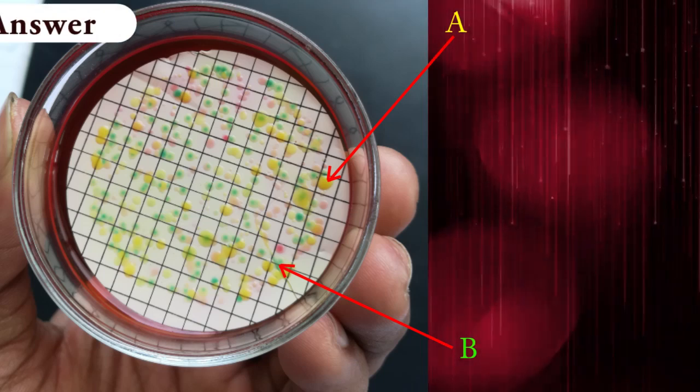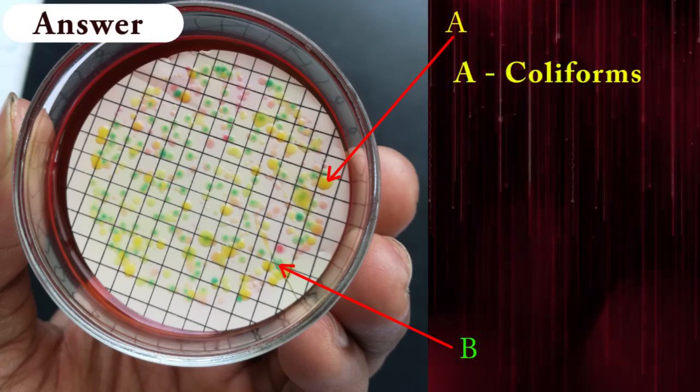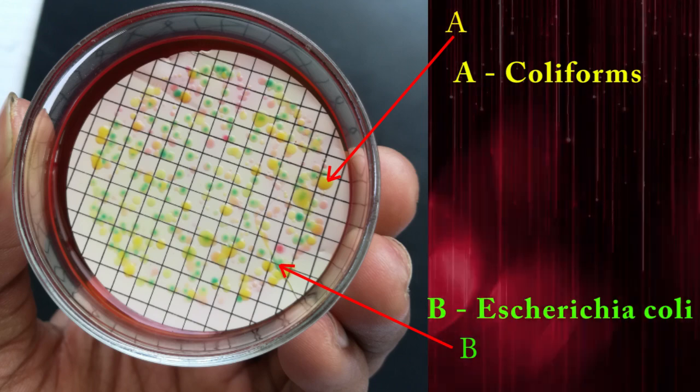The correct answer is: yellow color A colonies are coliforms, green color B colonies are Escherichia coli.